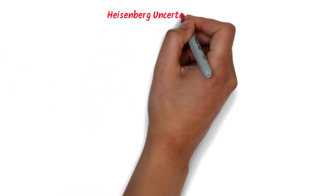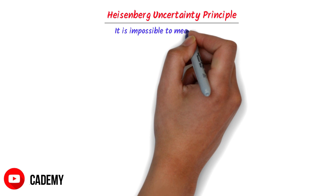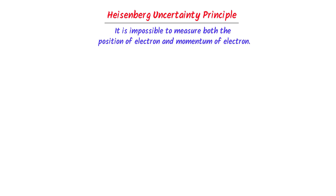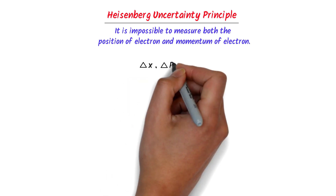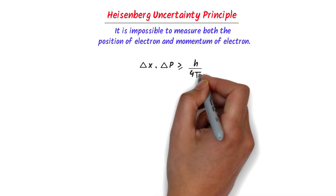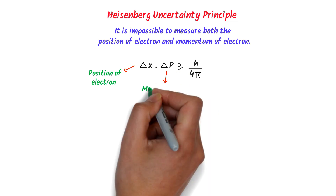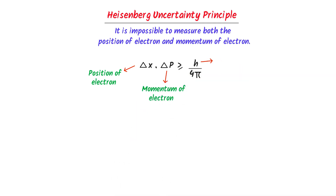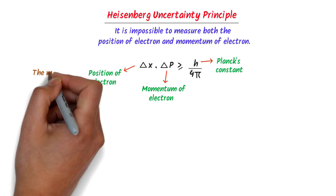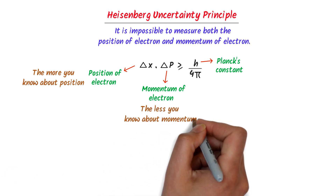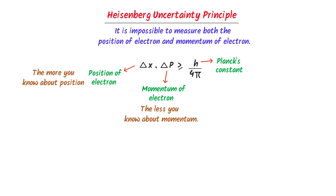Therefore, Hassenberg states that it is impossible to measure both the position and momentum of microscopic particles simultaneously. Or we can write: Del x into Del p is greater than or equal to h upon 4 pi. Here, Del x is the uncertainty in position of the electron, Del p is the uncertainty in momentum of the electron, and h is the Planck's quantum. We can also say that the more you know about the position of the electron, the less you know about the momentum of the electron. Or, the more you know about the momentum of the electron, the less you know about the position of the electron.